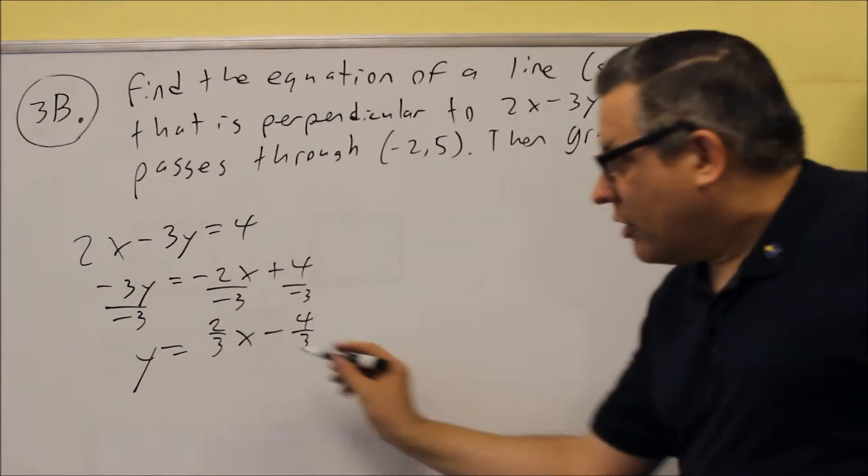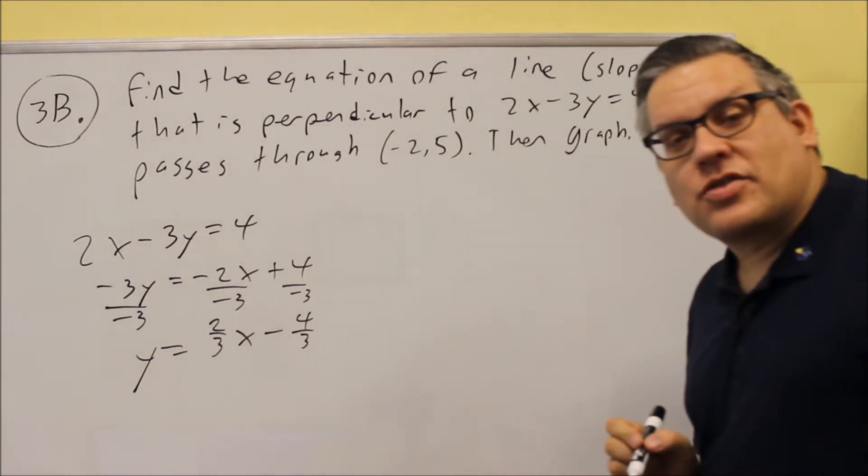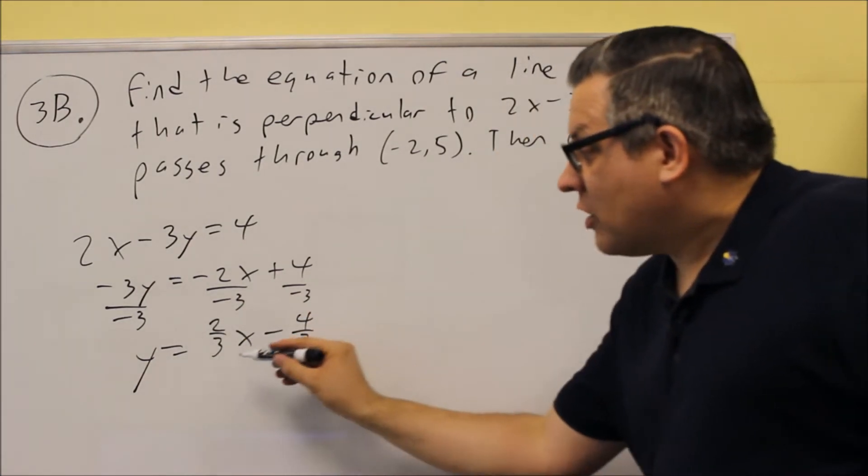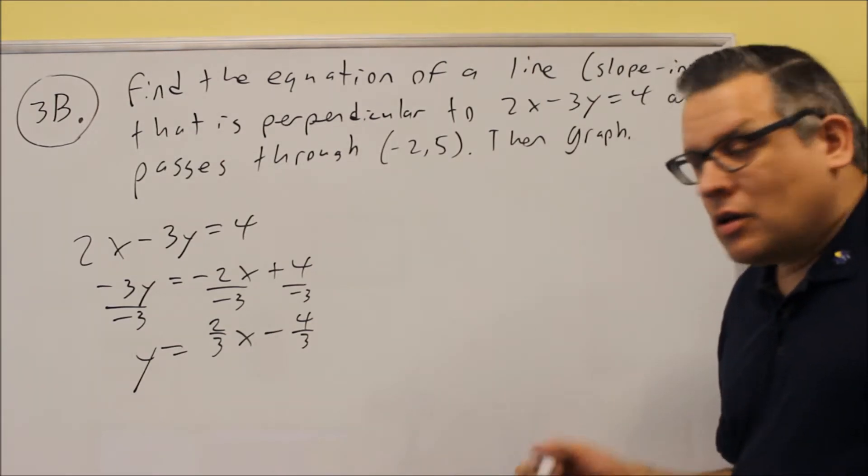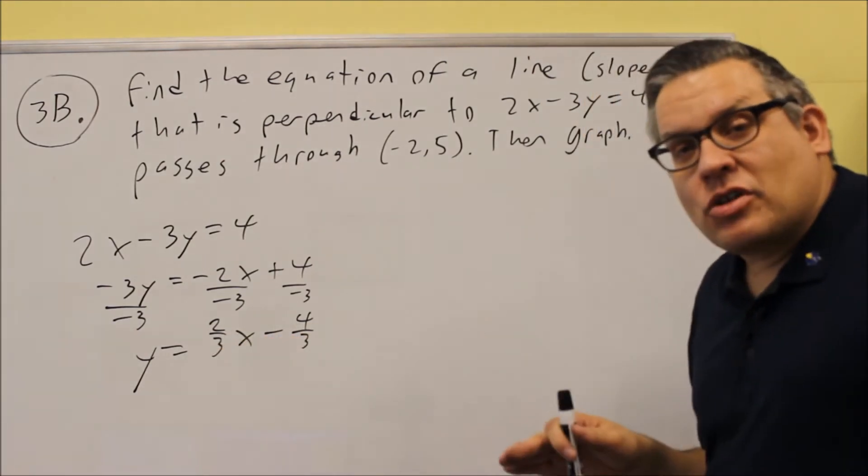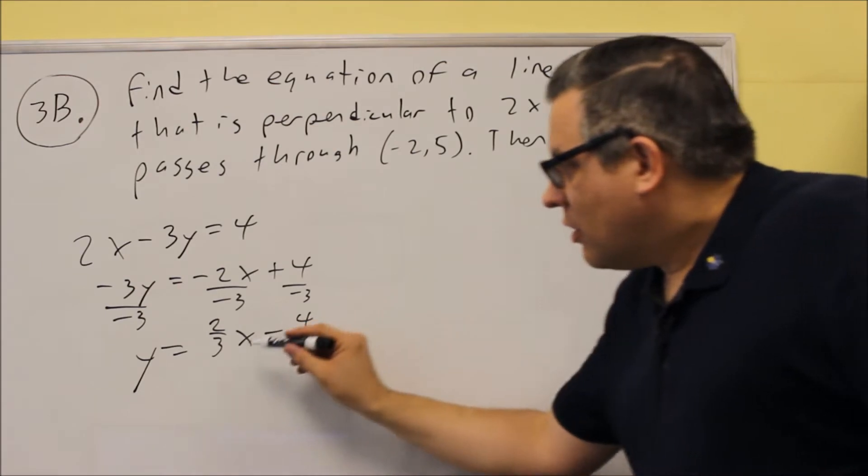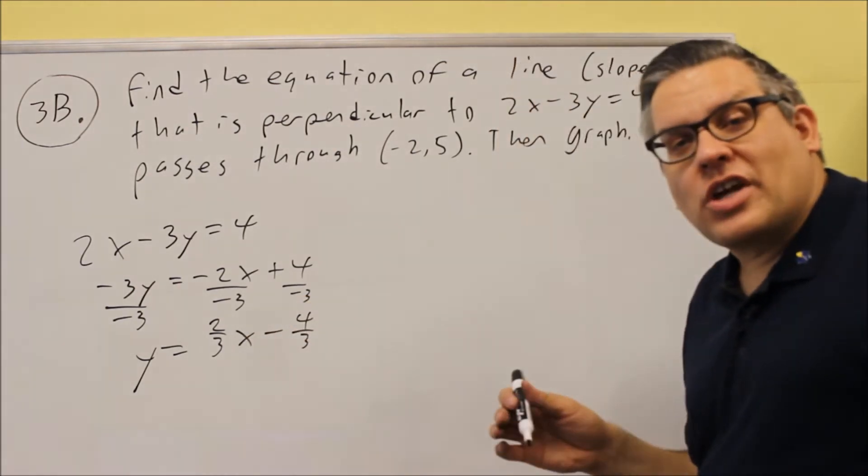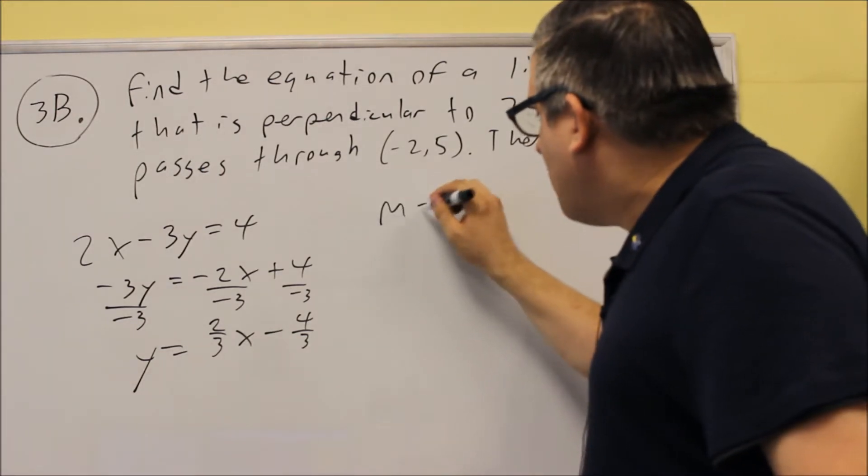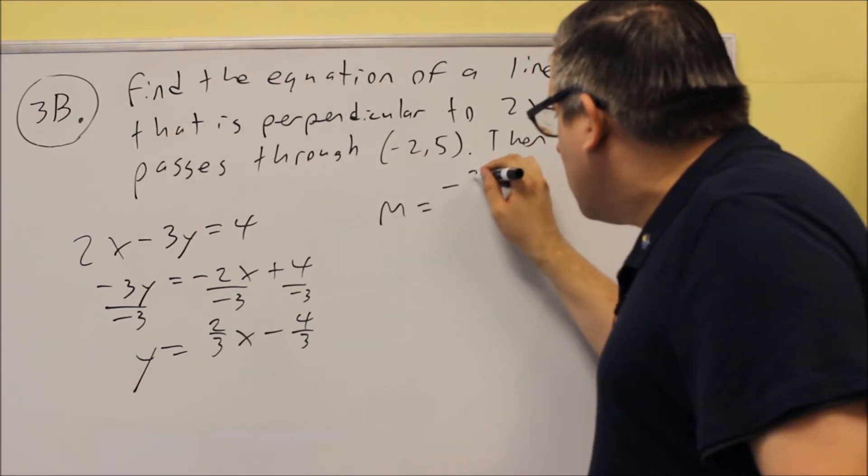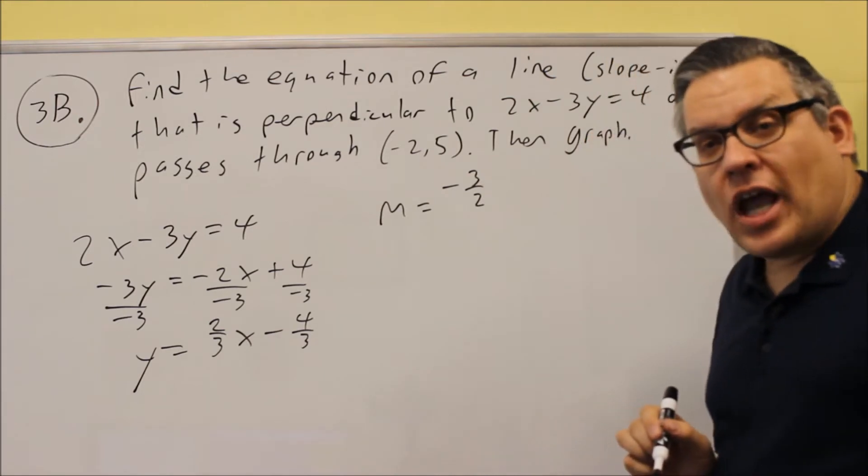The only thing that we care about is the 2/3 that's there. We want to find a line that is perpendicular to that one. When you have perpendicular, you have opposite reciprocal slope. So if it's 2/3, you want to take the opposite sign, so it's going to be negative, and you flip the fraction. So the M that we want to use is going to be negative 3/2.